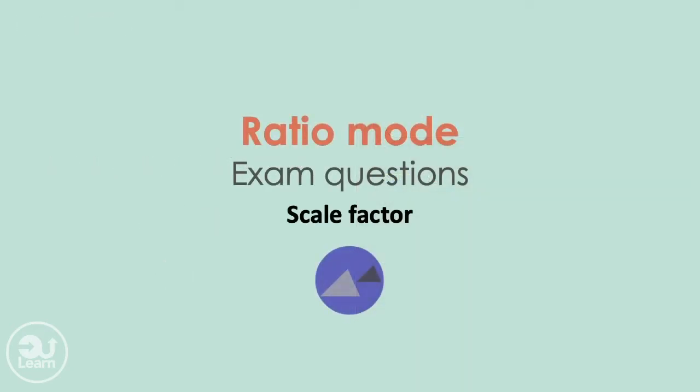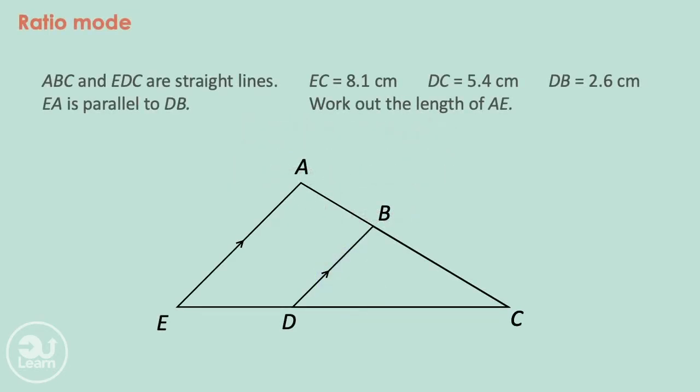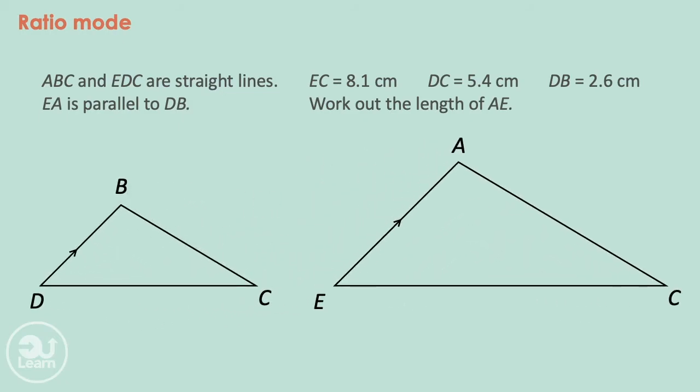So let's keep it going, another type of question is scale factor. ABC and EDC are straight lines. EA is parallel to DB. EC equals to 8.1cm, DC equals to 5.4cm, DB equals to 2.6cm. Work out the length of AE. Let's start by separating our triangles. Both of these triangles are mathematically similar. Therefore, the corresponding sides have the same relationship. Let's place the lengths on the shapes. We're trying to find the length marked X.